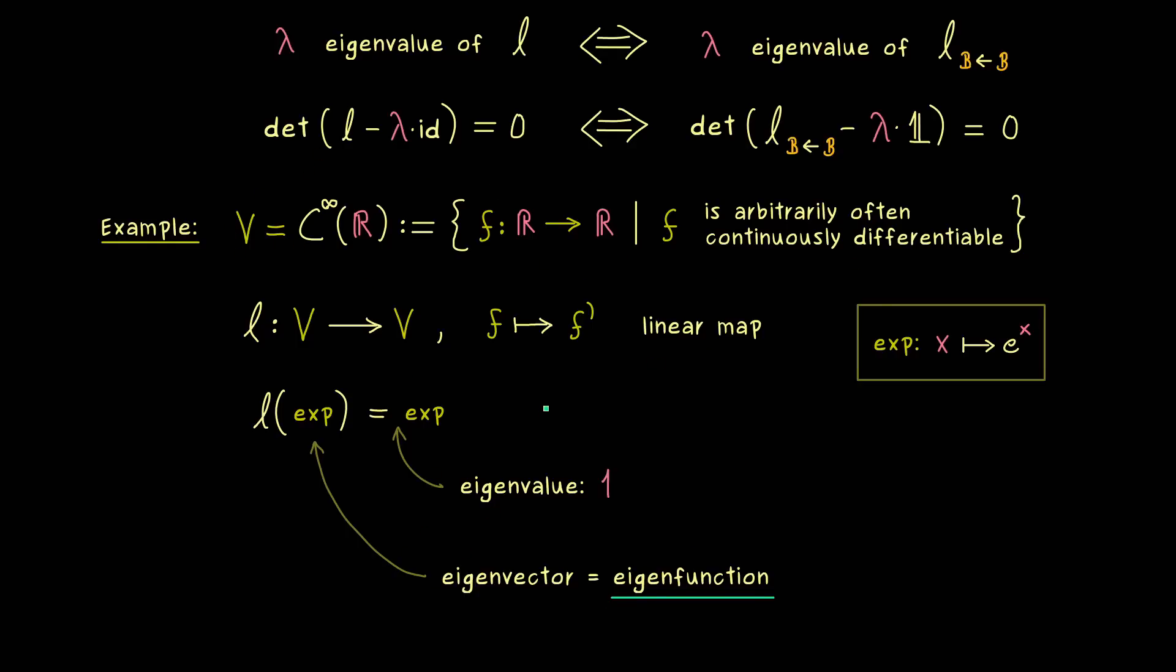However it turns out it's not so easy to find all eigenvalues and all eigenvectors in an infinite dimensional example. Therefore this is something I discuss in my other video course called functional analysis. Indeed there we always work with infinite dimensional cases, where in linear algebra we often have a finite dimensional case. Therefore here in our abstract linear algebra course I want to calculate more with the matrix representations.